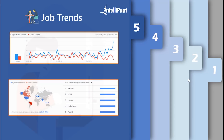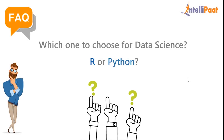Looking at Google job trends for R and Python over the past 12 months worldwide, Python is requested more than R in job postings. This is because of Python's popularity and its need in the current industry — Python is a versatile, all-rounded programming language used for web applications, game development, artificial intelligence, data science, statistical analysis, and more. R is used mainly among statisticians and data miners for developing statistical software and data analysis. This clearly depicts that there are more jobs available for Python than for R.